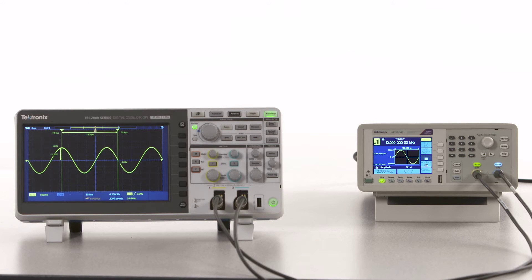In this video, I'm going to focus on basic time and amplitude measurements. I'm going to use this TBS 2102 oscilloscope and a function generator, but many of the techniques I'm going to show you can be used on other scopes as well.